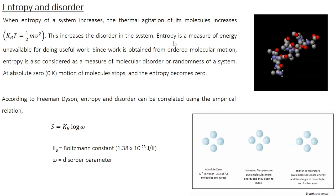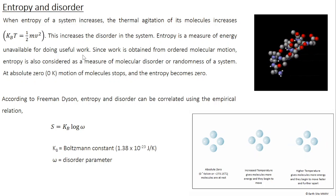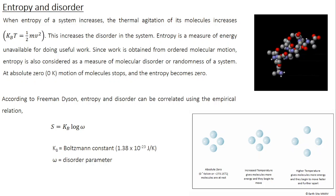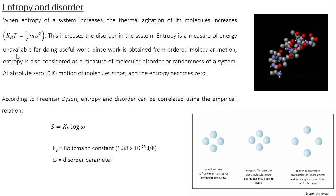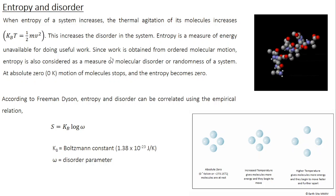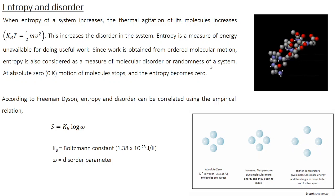From the previous discussion, entropy is a measure of energy unavailable for doing useful work. Work is associated with ordered molecular motion — when a force is applied, all molecules move in the direction of the force, and force times displacement gives the corresponding work. So work is obtained from ordered molecular motion. When we say energy unavailable for doing useful work, we are talking about energy used up in disordered molecular motion. That is why entropy is considered a measure of molecular disorder or randomness of a system.